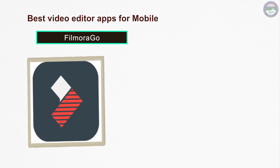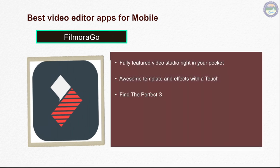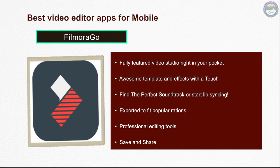Filmora Go is a very popular video editing software also available as an Android app. When you use Filmora Go, you can easily trim or cut your video. You can also add music, add transitions, and there are a lot of other things that you can do.